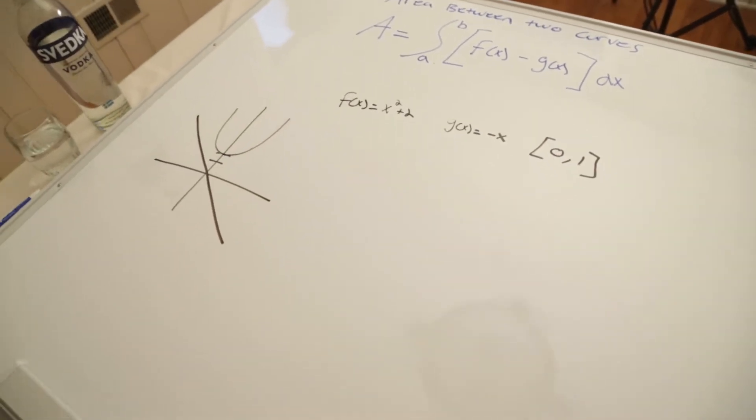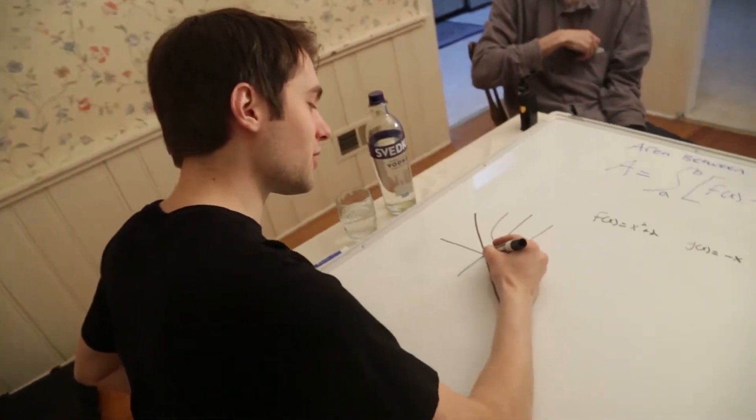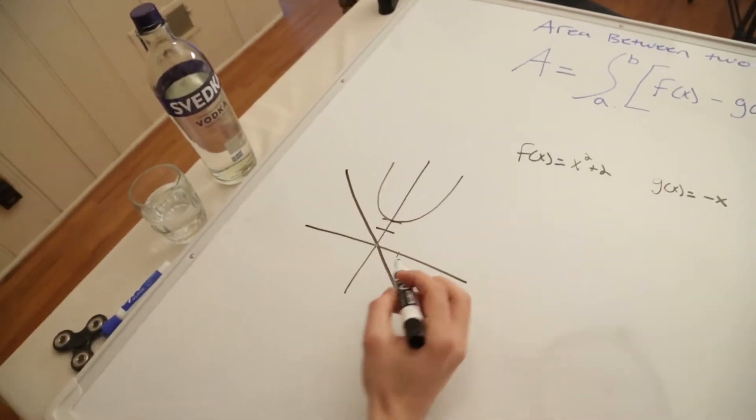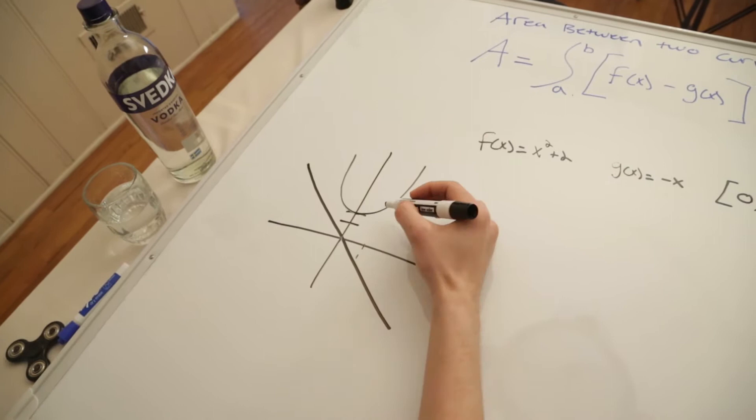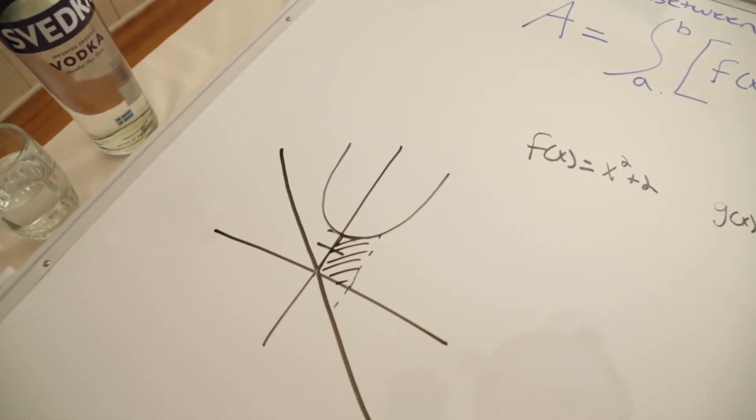So sometimes the interval will be given to you, sometimes it won't be given to you. I'm going to show you how to find the interval if it's not given to you. Do we need to memorize our graphs for class? You definitely need to memorize. So from zero to one, this being one, this is the area that we are looking to find.